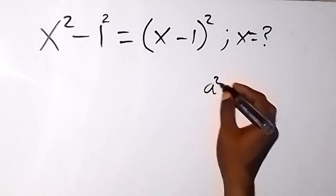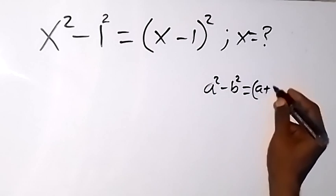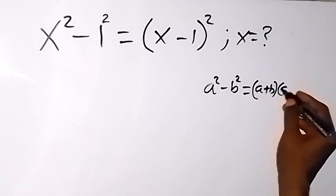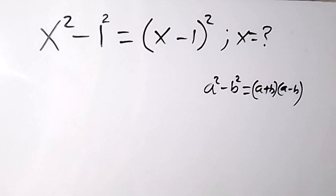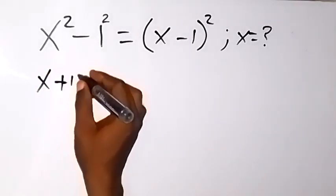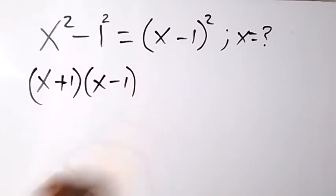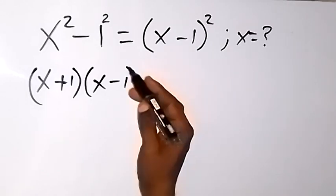We have a² - b² the same thing as (a+b) multiplied by (a-b). And when we apply that in this case, we are going to have on the left answer: (x+1) multiplied by (x-1).